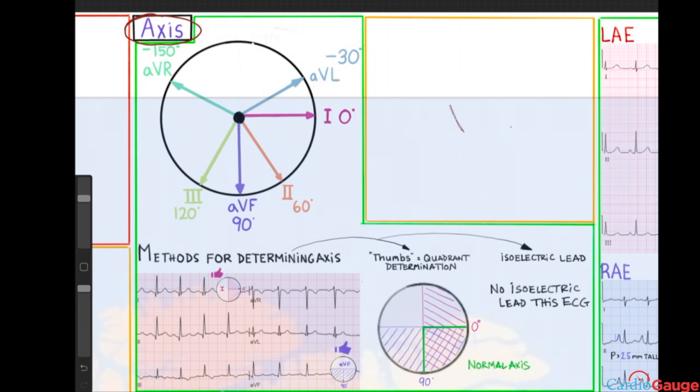For example, if the left side of the heart is very thick and muscular because of high blood pressure, then the axis will point more towards that. And you can actually get an axis like this with left ventricular hypertrophy.